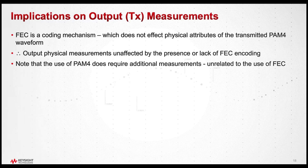The reason is because forward error correction itself is a coding mechanism. It doesn't change the physical analog attributes of the waveform that's transmitting the serial data, like transmitter de-emphasis for example would do. So therefore the measurement really is unaffected whether or not FEC is present or not.